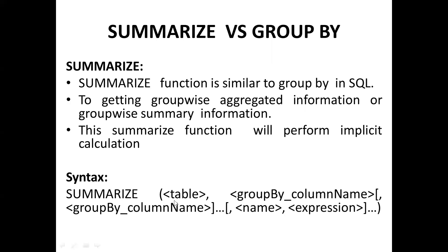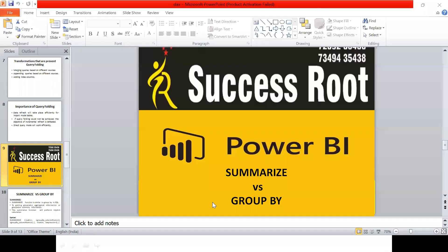From a syntactical point of view, first we need to write the function name, then we need to mention the group-by column name. If the business requirement is one column, mention one column; if multiple columns, you can mention multiple columns. In DAX syntax, anything shown in square brackets is optional, and the remaining arguments are mandatory.